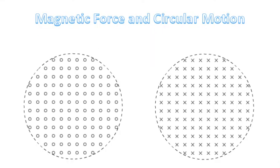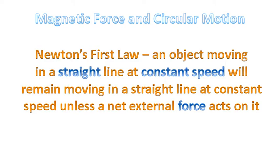So let's look at the magnetic force and circular motion in greater detail. Newton's first law. An object moving in a straight line at a constant speed will remain moving in a straight line at a constant speed unless a net external force acts on it.